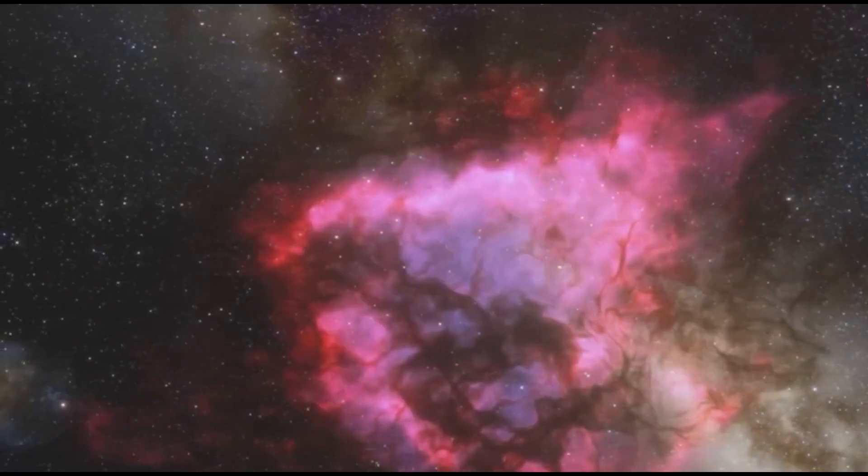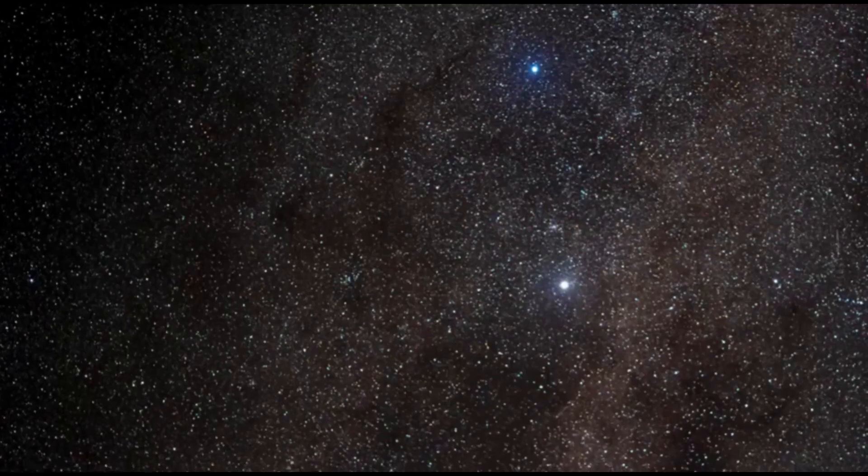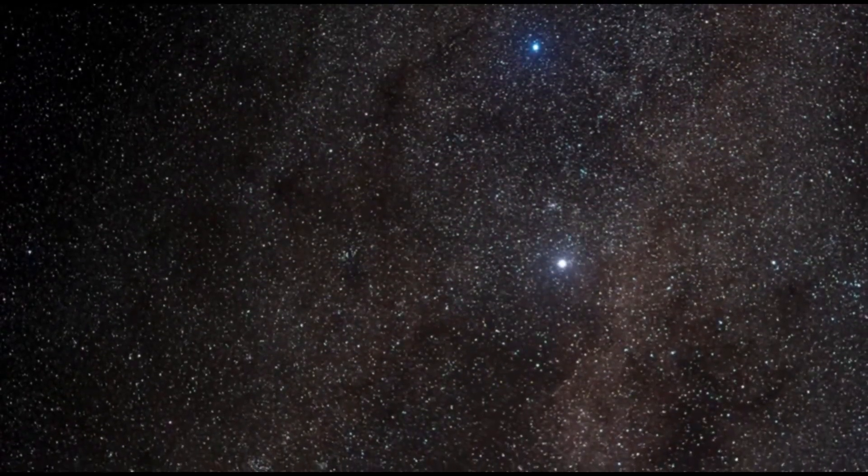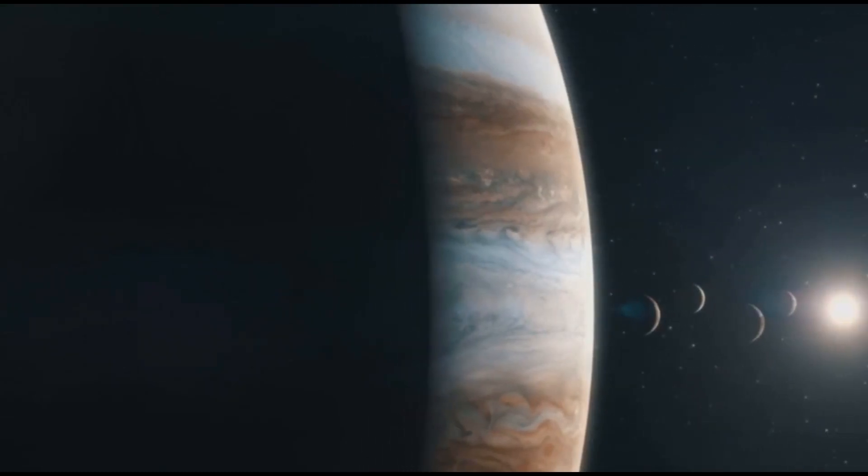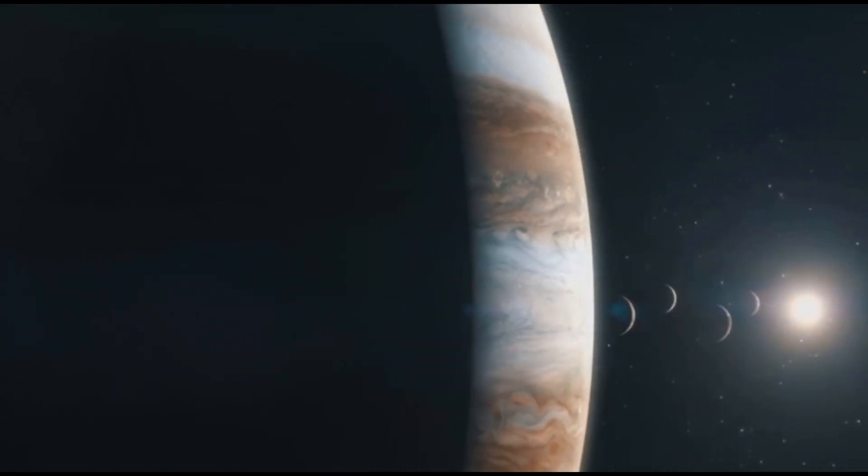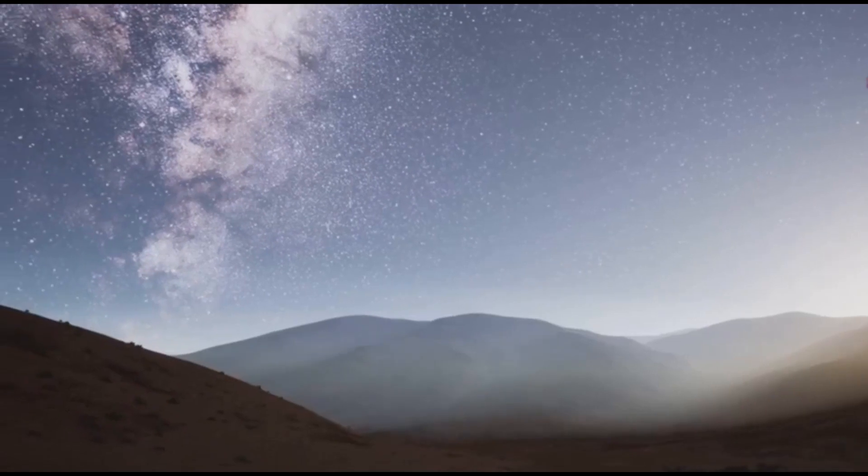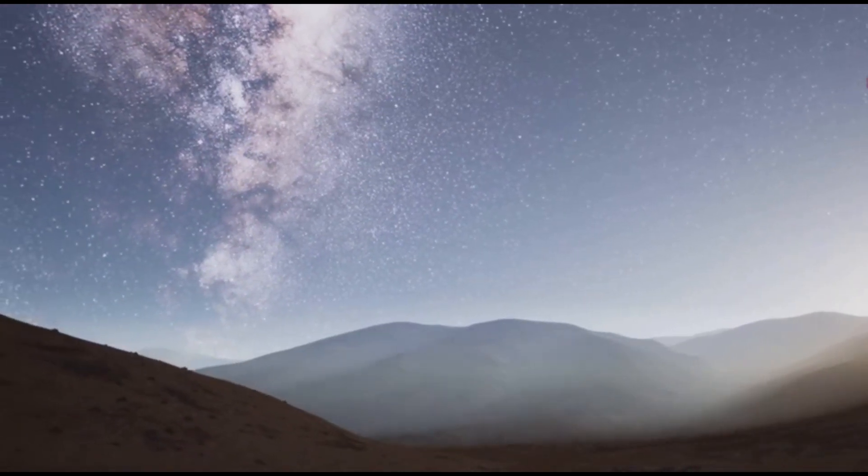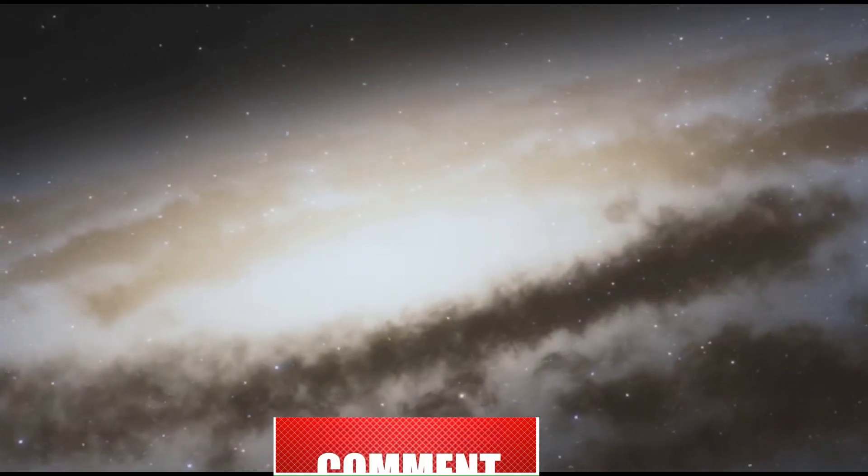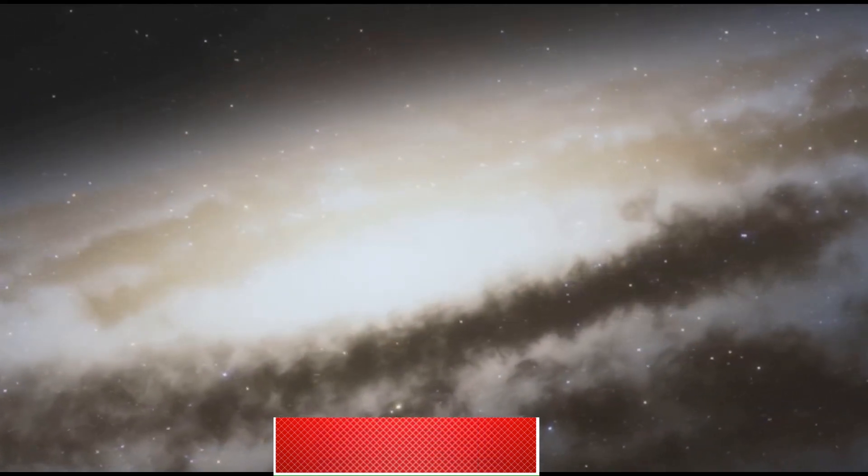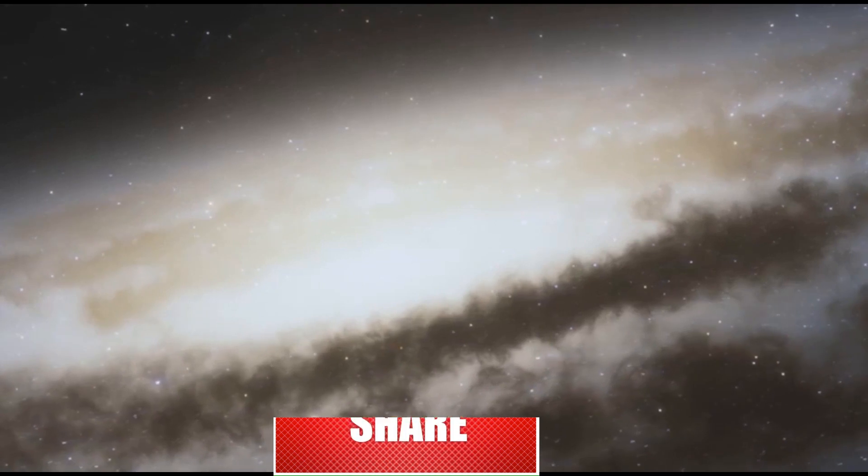Imagine a sphere so large that it could engulf the orbits of five planets in our solar system. That's the scale of UY Scuti A, a star so colossal that it pushes the boundaries of our understanding of stellar sizes. Its diameter is estimated to be roughly 1,708 times that of our sun. To put that in perspective, if UY Scuti A were placed at the center of our solar system, its surface would extend beyond the orbit of Jupiter.